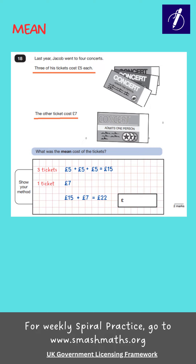Now we need to divide the total amount by the number of tickets, which is four. £22 divided by four is equal to £5.50. So the mean cost of the tickets is £5.50.